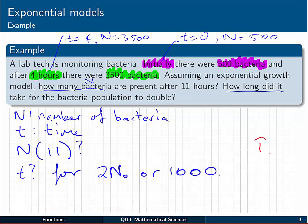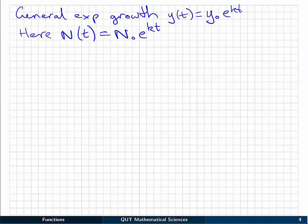Let's look at forming our model and answering those questions. So generally speaking, an exponential growth model takes the form y(t) equal to y₀e^(kt). We're going to use our specific letters here though, because we're talking about a number of bacteria, and say N(t) is equal to N₀, or N initially, times e to the kt.